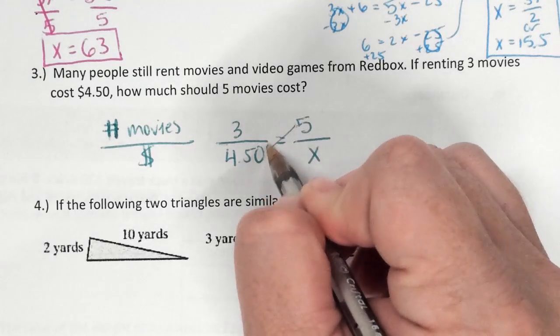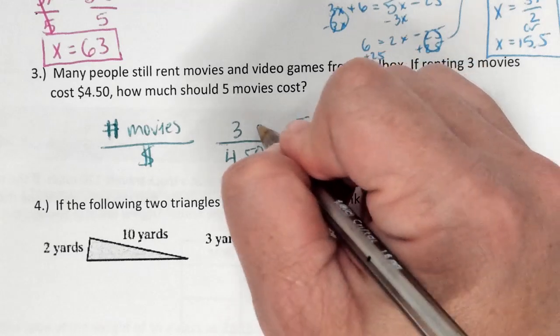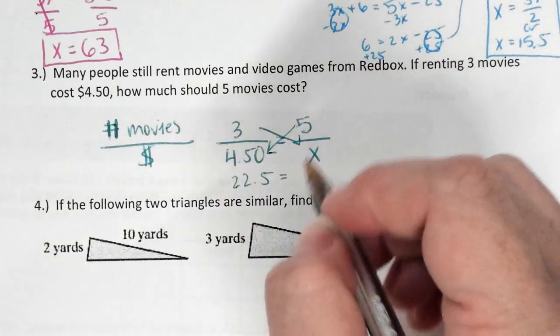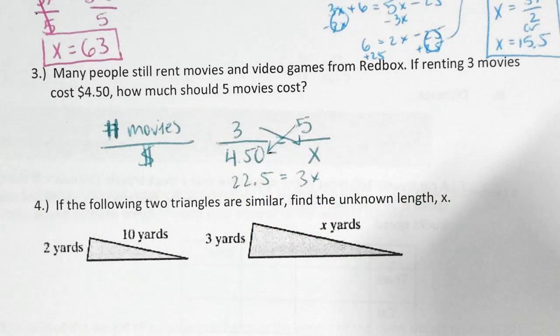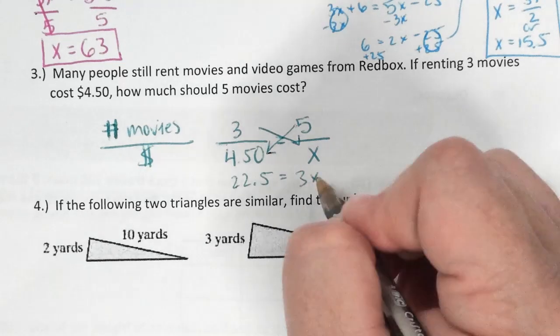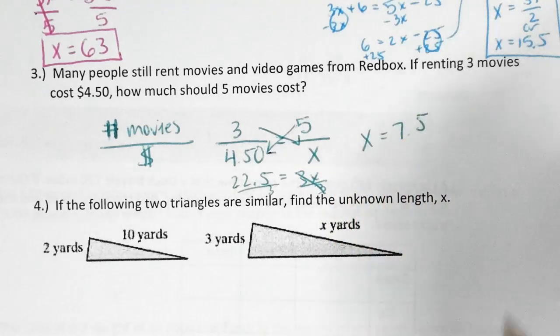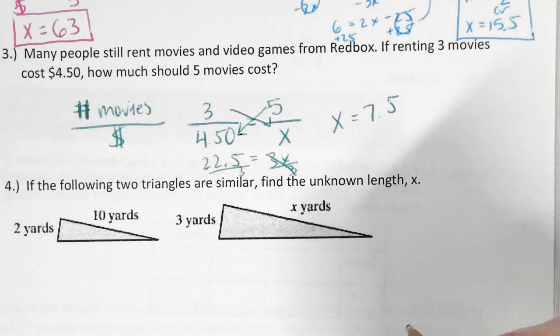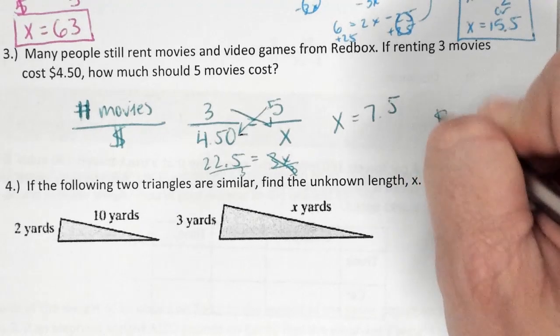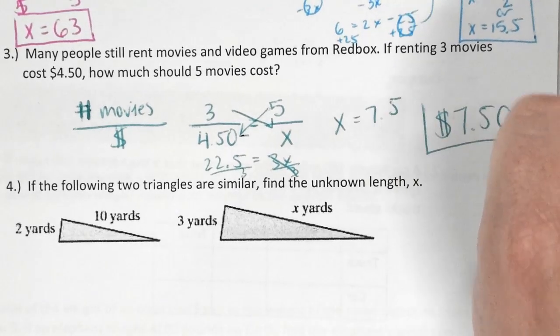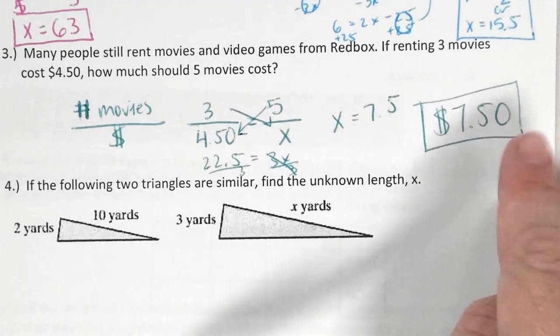So now I'm going to cross multiply. What's five times $4.50? 22.5. And then three times x is 3x. Now what? Divide. By? Three. And I get x equals 7.5. Now, is that my final answer? How do I write it? You have to label with word problems. 7.5 and $7.50 are different.